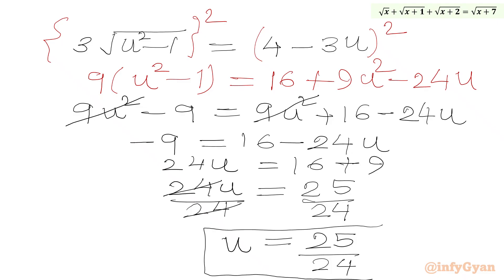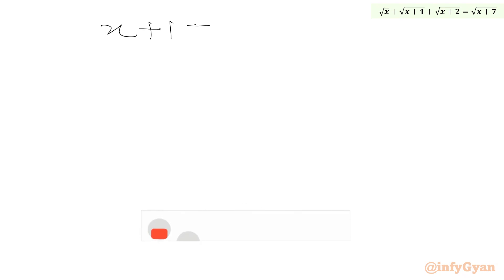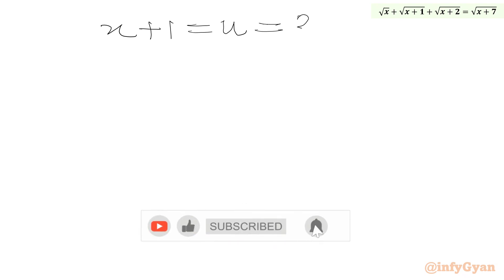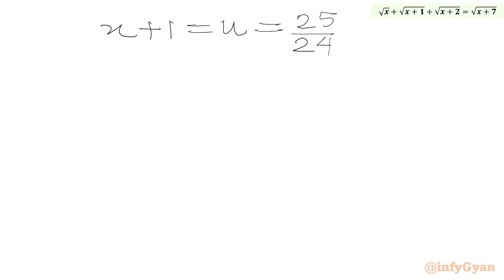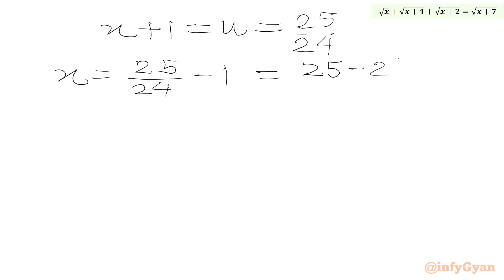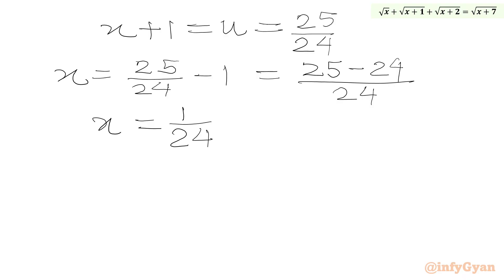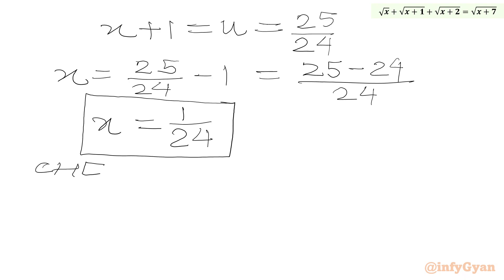Since u was our substitution x + 1, we write x + 1 = u = 25/24, so x = 25/24 - 1 = 1/24, which is a positive number. As per our domain condition, this solution is valid. Now we are going to verify through the equation.